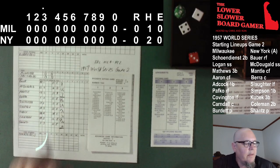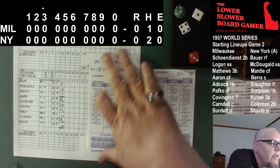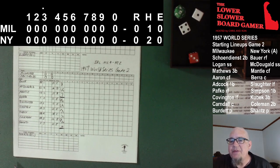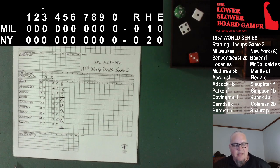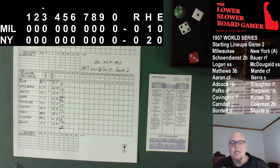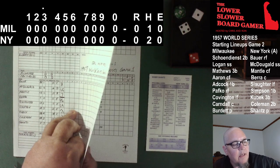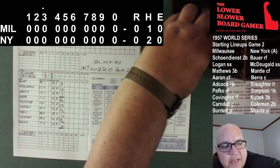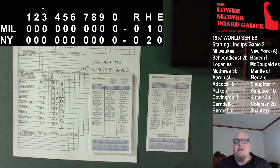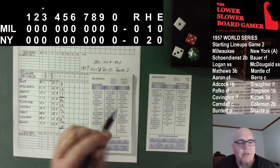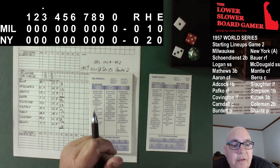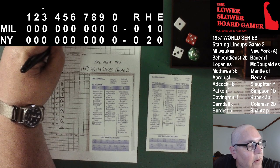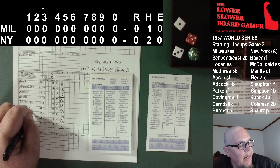Top of the third inning. Bobby Shantz will face Del Crandall, Lou Burdette, and back to the top of the order — Red Shane Dean. Game one score was New York Yankees 3, Milwaukee Braves 1. The Braves are looking to even up the series here at Yankee Stadium before heading back to Milwaukee. Shantz is set. Crandall waits — 5-4. Hard ground ball to third base, that's Kubek — errant throw. That's going to bring Simpson off the bag. Crandall reaches with an error, E5.